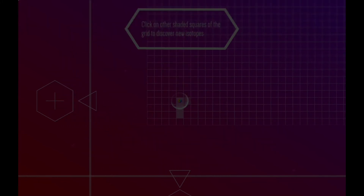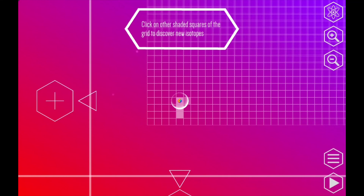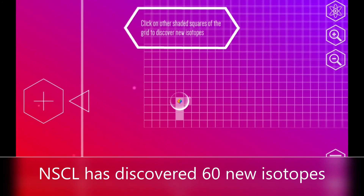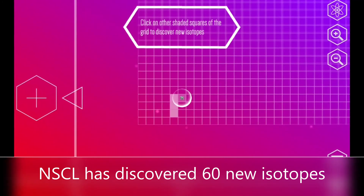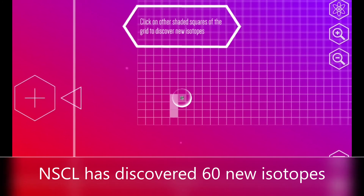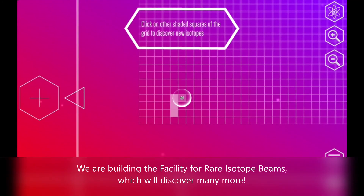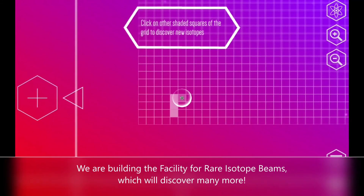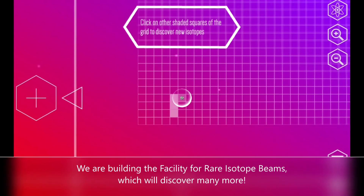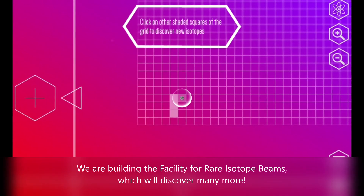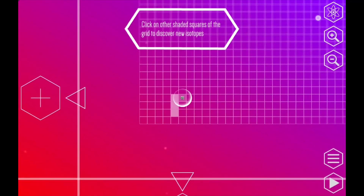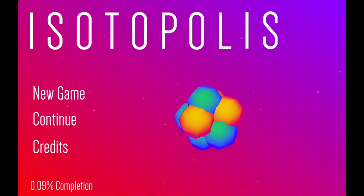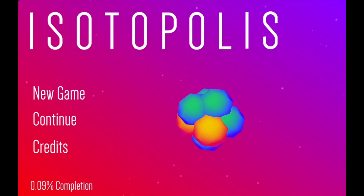I made Lithium-7. You can see that next to Lithium-7 there's a new unlocked undiscovered isotope ready to play — that's the next level. There are many, many levels. Our laboratory and all the other labs on earth have so far discovered over 3,000 different isotopes, so this will keep you busy. I'm going to take you back to the menu using this little atom icon at the top right. I've finished 0.09% of the game — excellent. Maybe you can beat that.